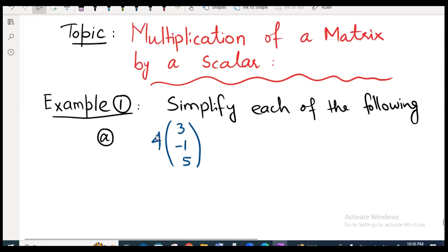This is, you know, it is not a matrix. 4 is not a matrix. So 4 is scalar and within the parentheses 3, minus 1, and 5. This is a matrix.